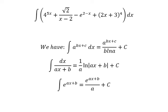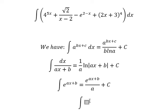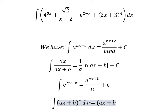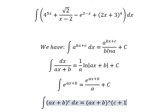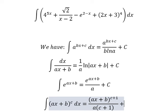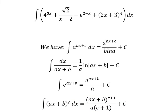The next formula: the integration of (as + b) to the power of c equals (as + b) to the power of (c + 1), over a multiplied by (c + 1), plus the constant C.